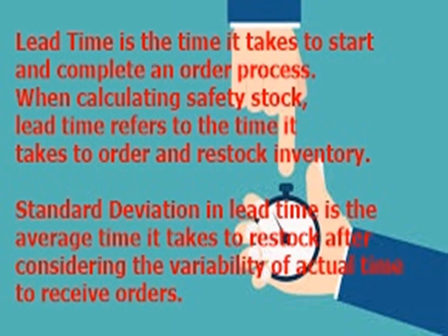Now let's define and explain each of these variables in the formula. The first variable is lead time standard deviation. As we know, lead time is the time it takes to start and complete an order process. When calculating safety stock, lead time refers to the time it takes to order and restock inventory. The standard deviation in lead time is the average time it takes to restock, after considering the variability of actual time to receive orders.